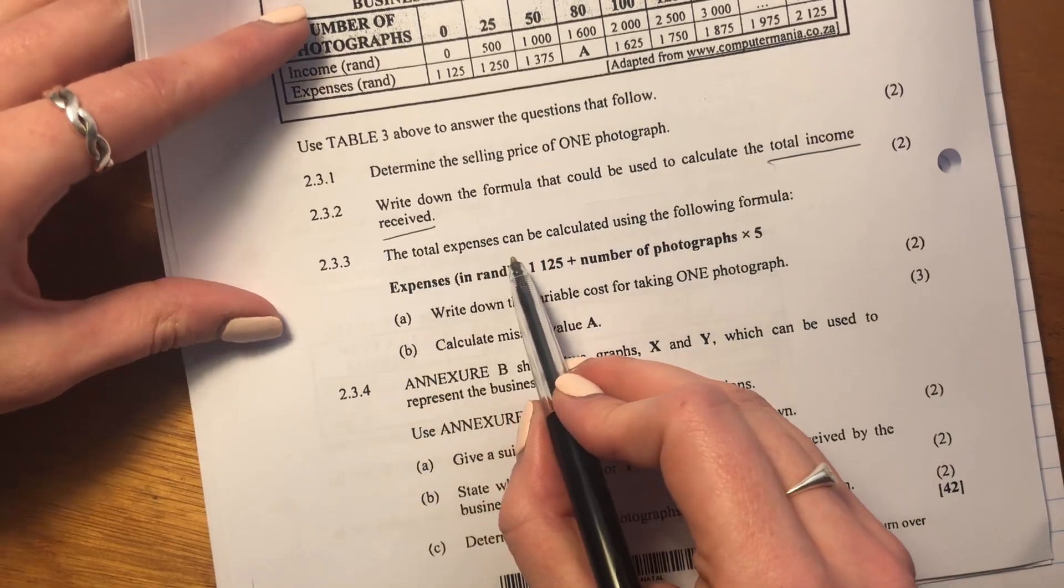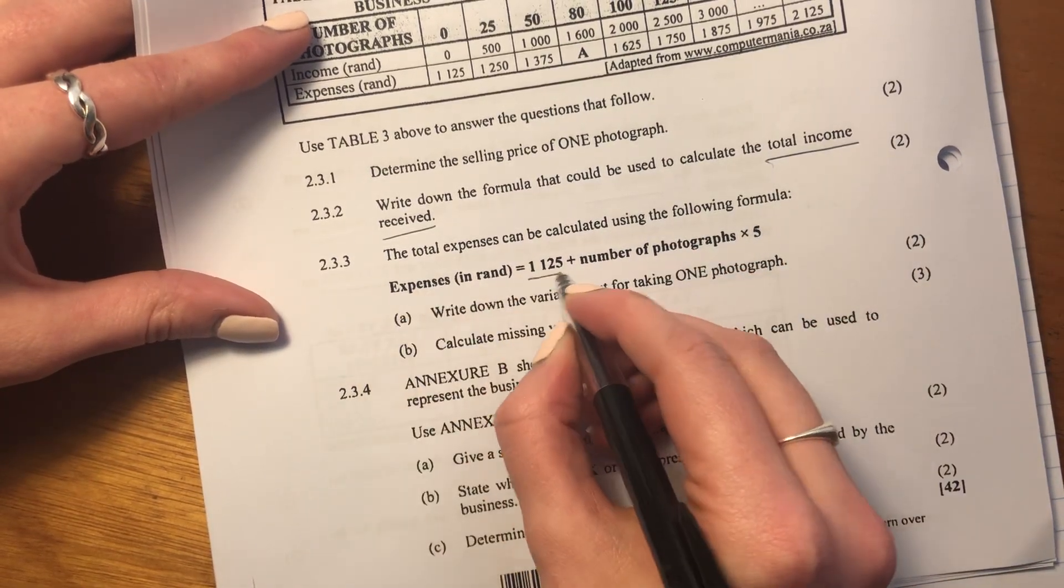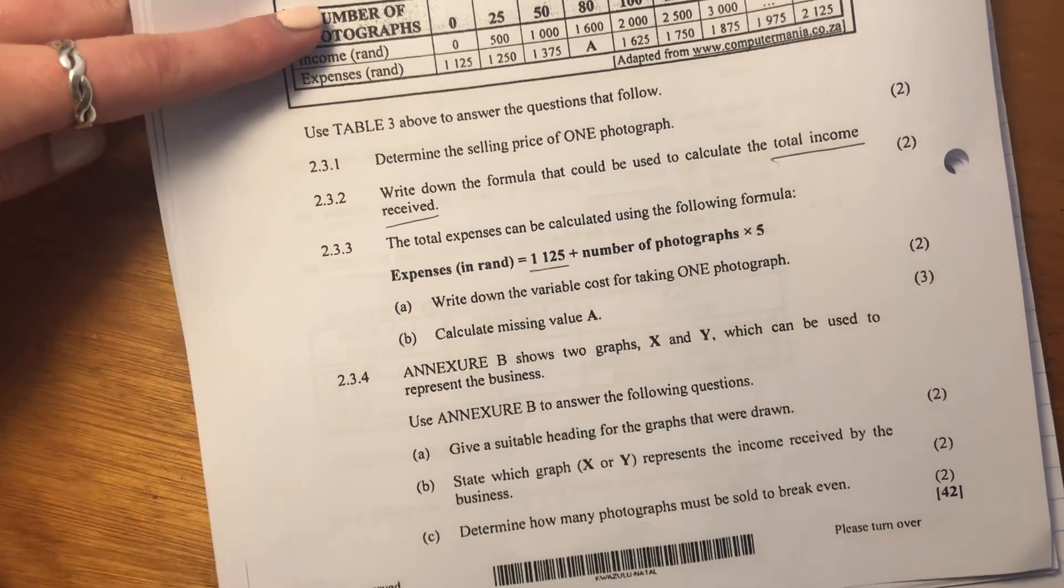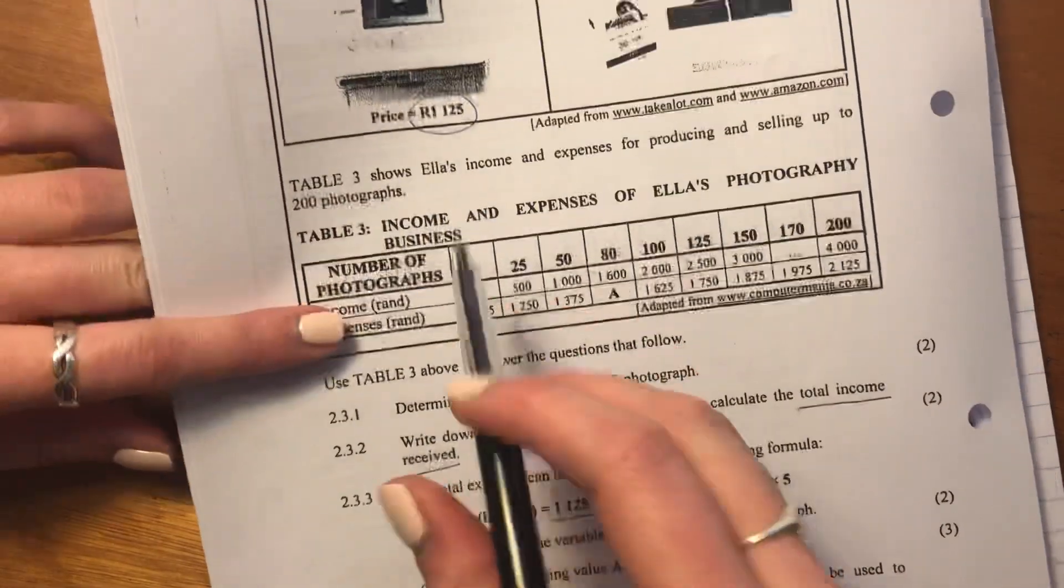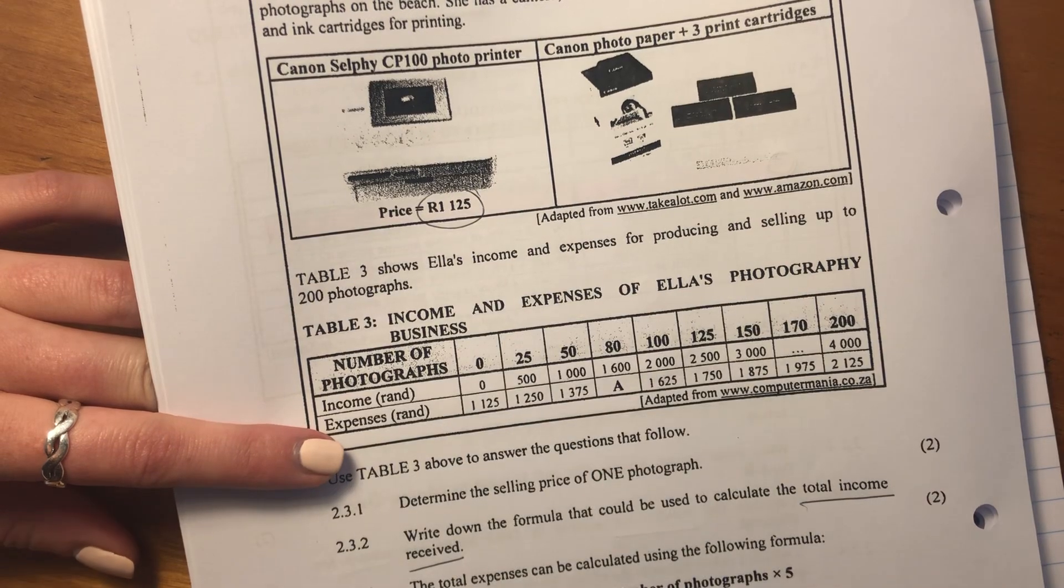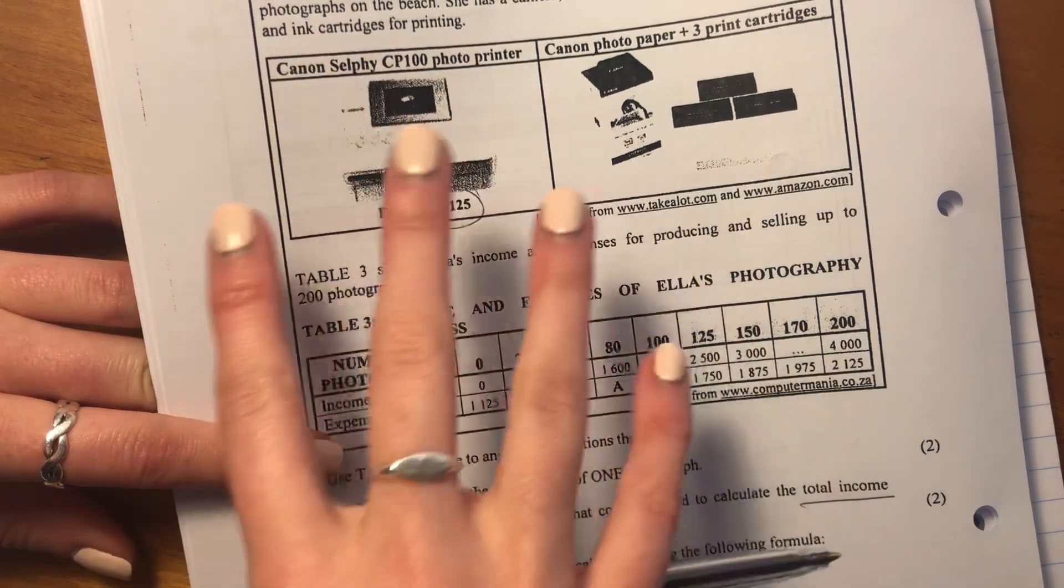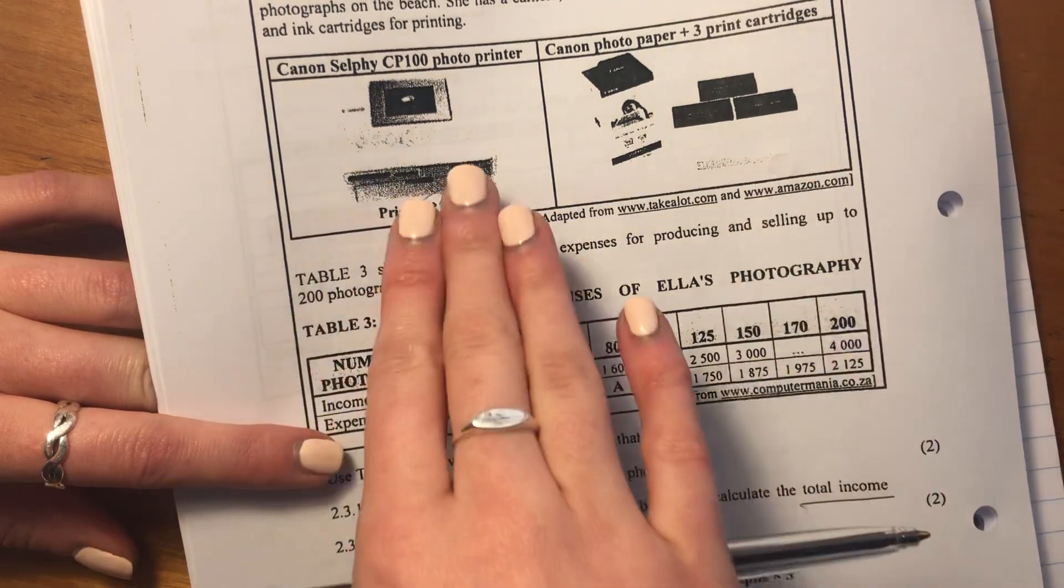Then it says the total expenses can be calculated using the following formula. It has this 1,125, which we know is actually just the cost of the printer. So that's like a fixed cost. She's going to incur that whether she sells one photo or 1,000 photos because she has to buy this printer. So she has this printer.